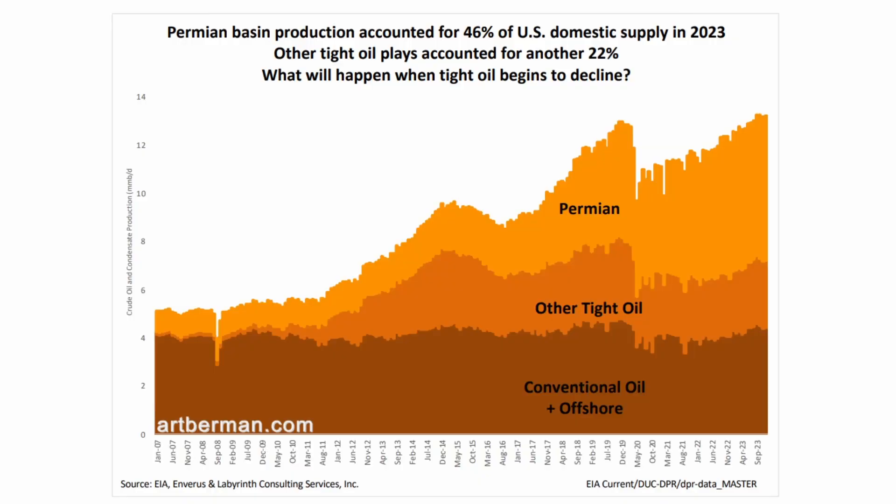We started with tight oil, and there are two categories on this chart: tight oil in general, and then tight oil from the Permian Basin in particular — which is the big one, the largest single supply of tight oil and just about any new oil in the world. The U.S., and therefore the world, is hugely dependent on tight oil and particularly the Permian Basin tight oil play.